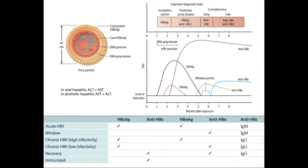Throughout the diagnostic process, different markers are looked for. With hepatitis, we always look at ALT and AST. In viral hepatitis, ALT is greater than AST — that's different from alcoholic hepatitis, where AST is greater than ALT. The HBs antigen is detected very early in acute disease, but is not seen during the window phase, recovery, or if the patient is immunized.